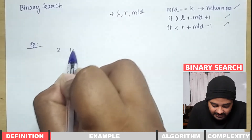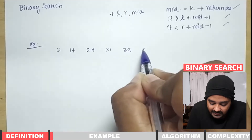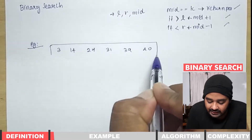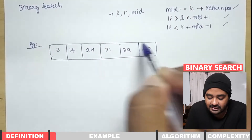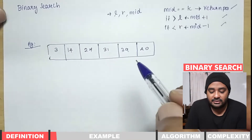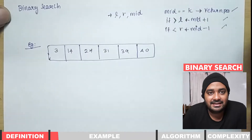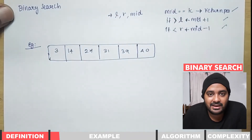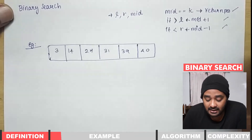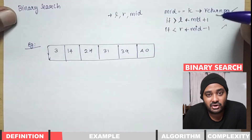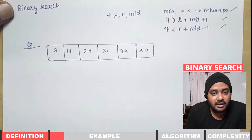Let's look at an example with the list: 3, 14, 27, 31, 39, and 40. The most important thing to note is that the list must be in sorted order — specifically ascending order. This is a key requirement for binary search. Our list starts with 3 and ends with 40, which is in ascending order.